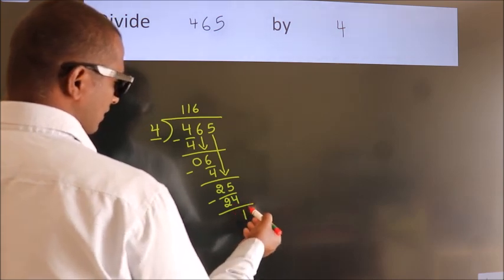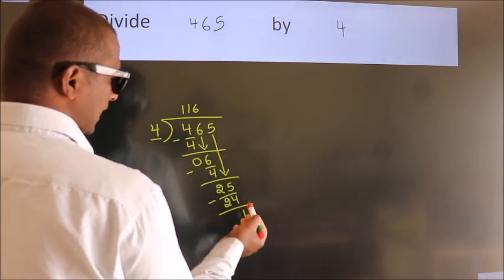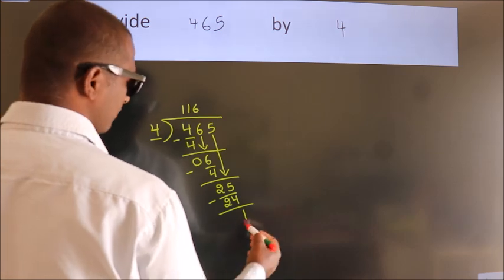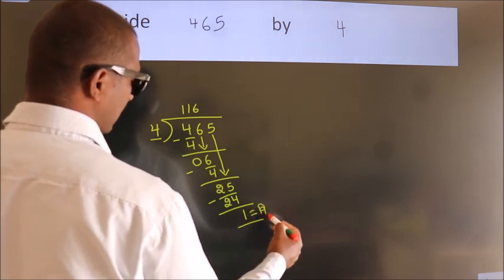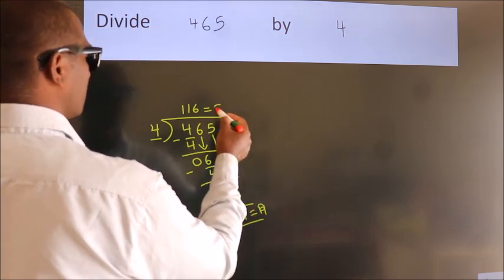After this, no more numbers to bring it down. So we stop here. This is our remainder. This is our quotient.